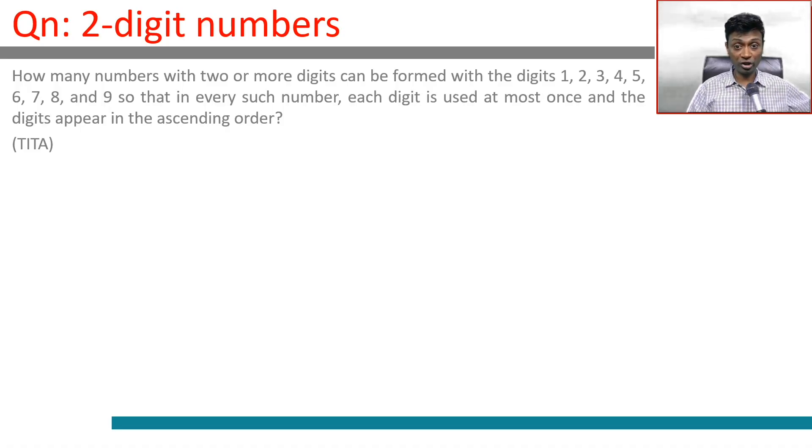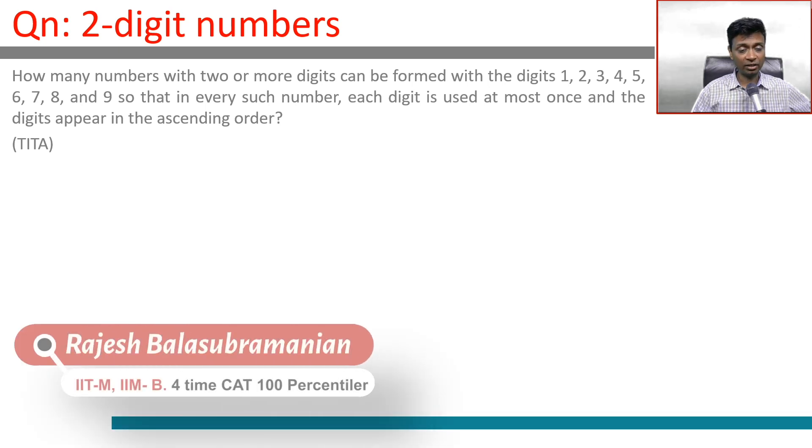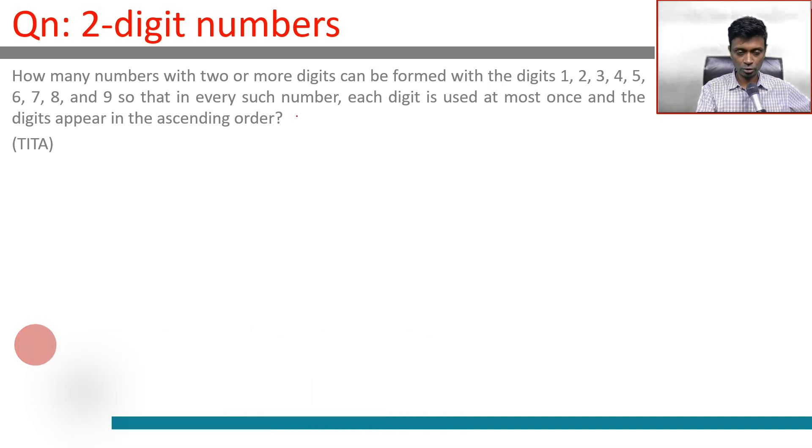How many numbers with two or more digits can be formed with the digits 1, 2, 3, 4, 5, 6, 7, 8, and 9 so that in every such number each digit is used at most once and the digits appear in ascending order? So we are looking for a number like 235, 146, 1457, 23479—digits in ascending order, any number of digits.